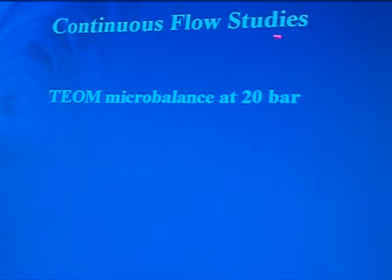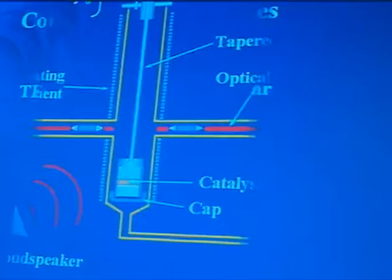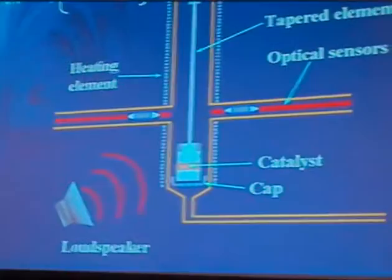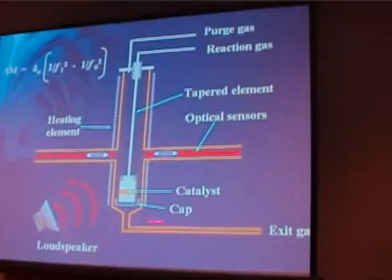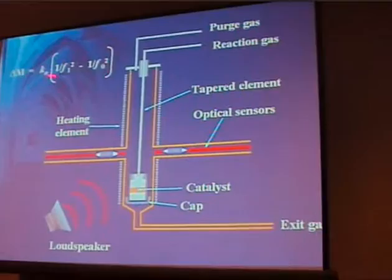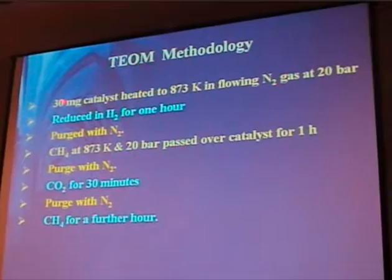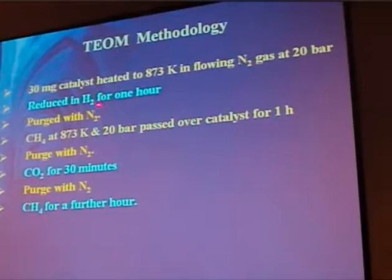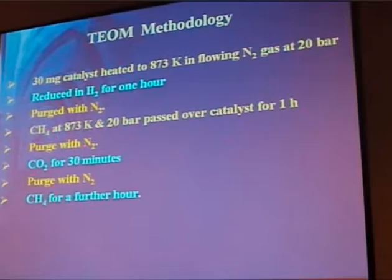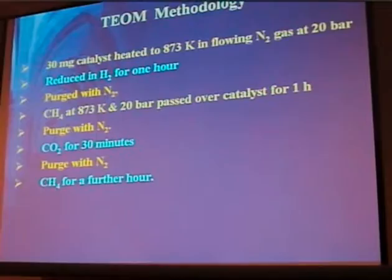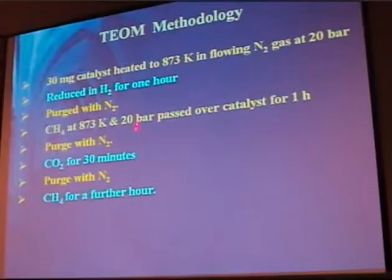The continuous flow studies were done in the TEOM microbalance at 20 bar. The catalyst sits in here, supported on a loudspeaker-like element, and we flow the gas through the tapered element and measure the change in mass using this equation. We use 30 milligrams of catalyst, heat to 600°C, reduce, purge, then flow methane at 20 bar for an hour, CO2 for 30 minutes, and then a further hour on methane.